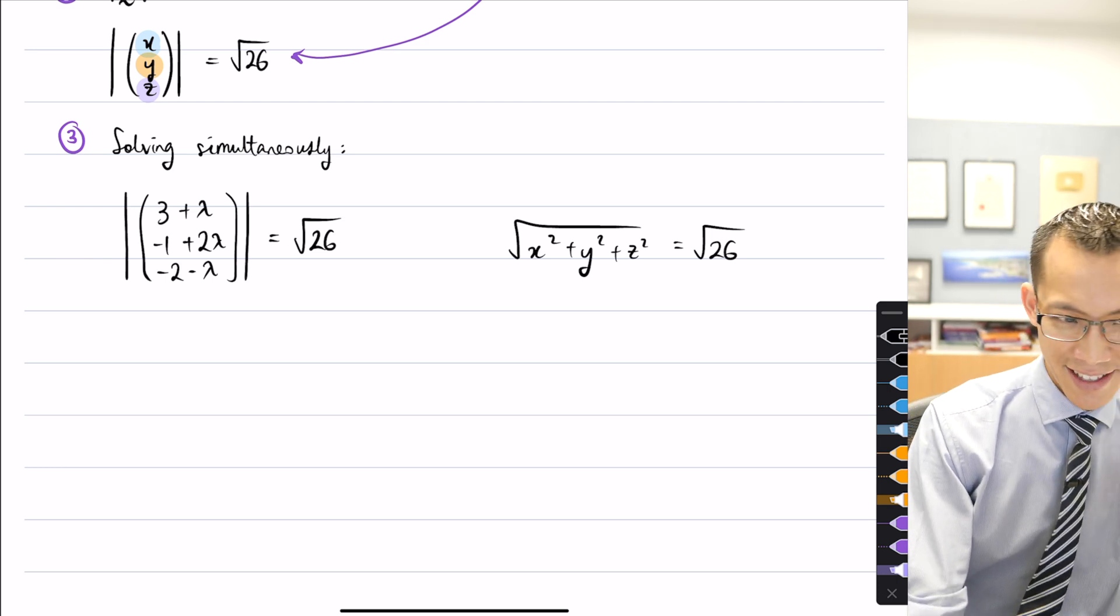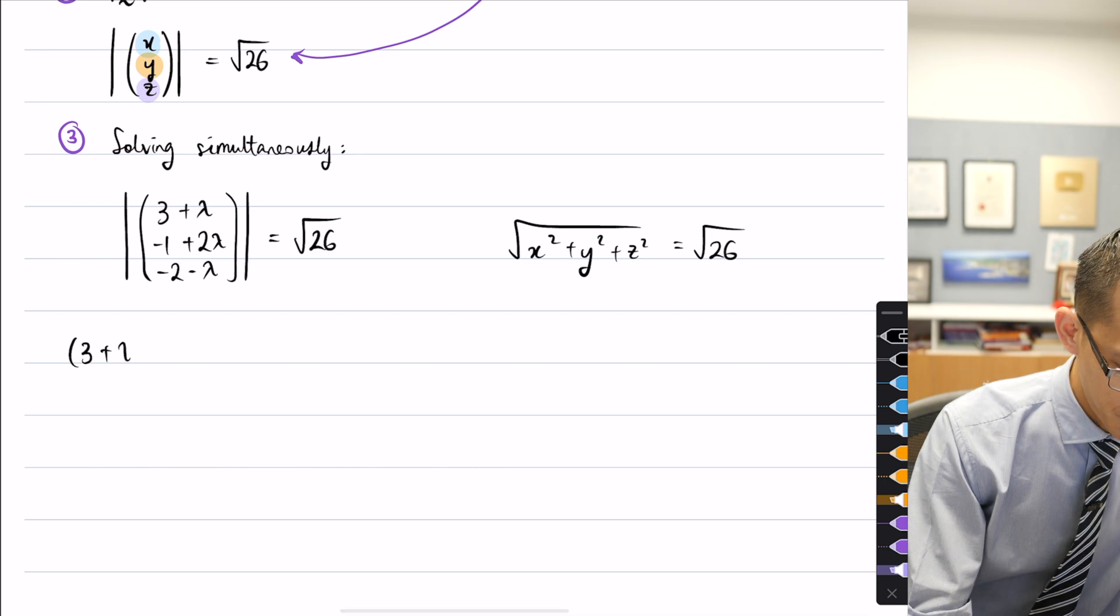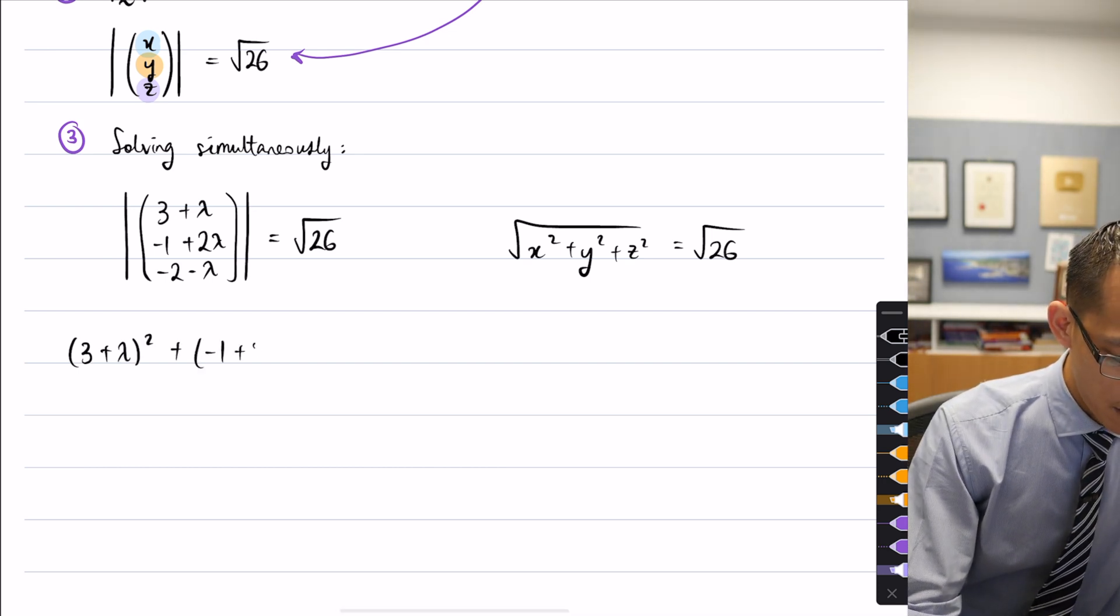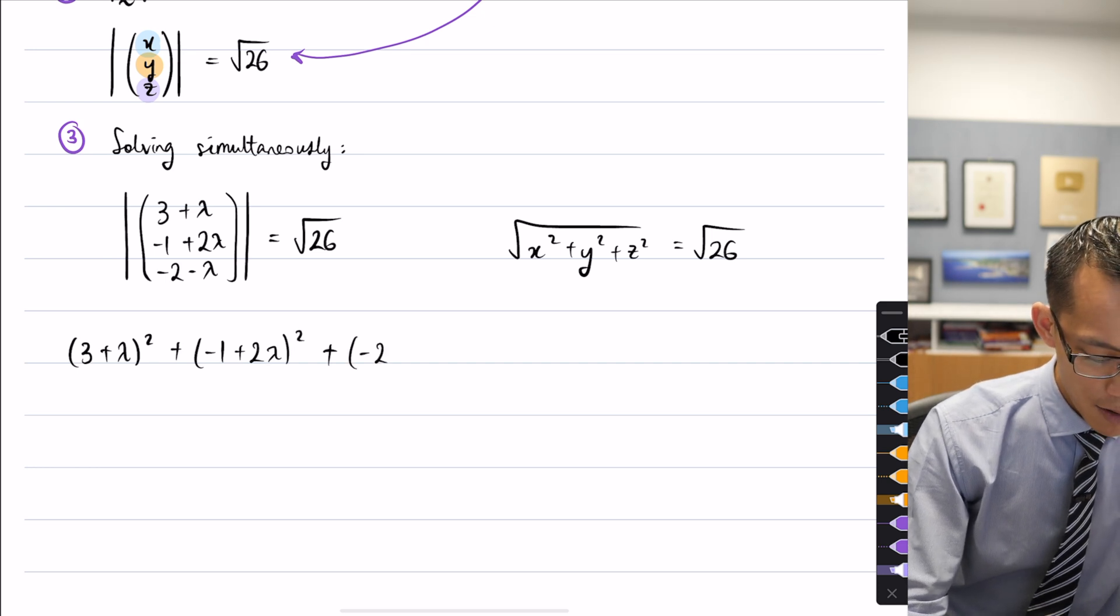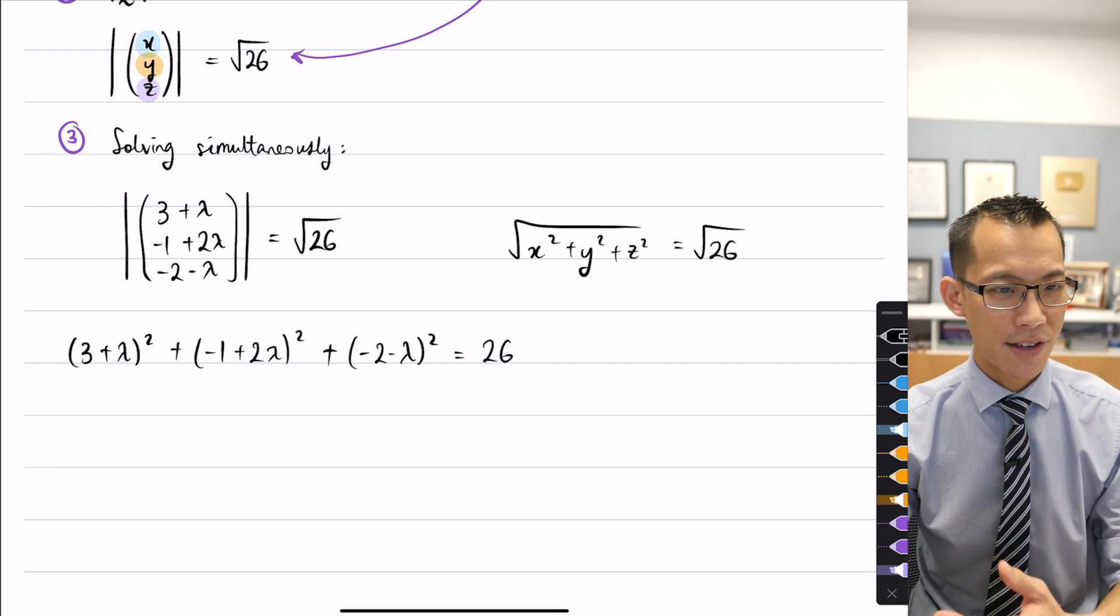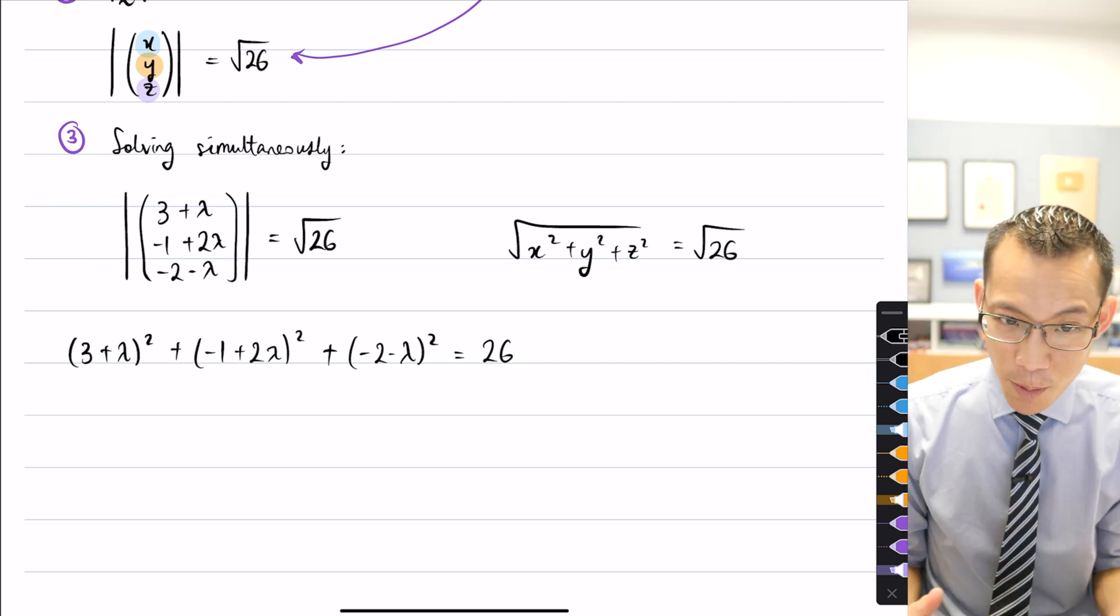So if you do like what you might remember, this is our formula for magnitude from the origin. That's going to be the square root of 26 in this case. So when I square out both sides, this is what I'm going to get. It's slightly laborious, but that's okay. Let's go for it. So there's my first one. Three plus lambda squared. I've got negative one plus two lambda squared. And then lastly, minus two minus lambda squared. That is the square root of 26 squared, so that's why I get 26 over there.